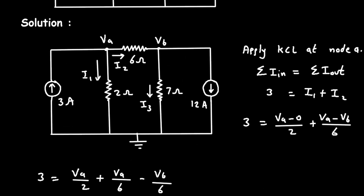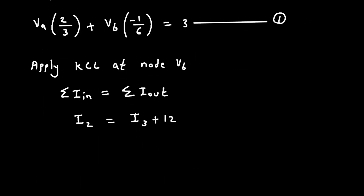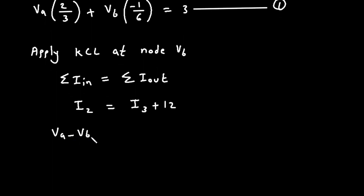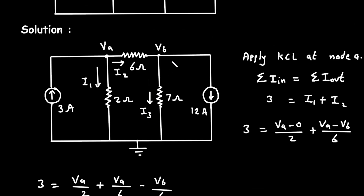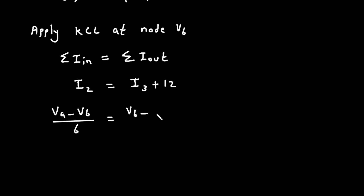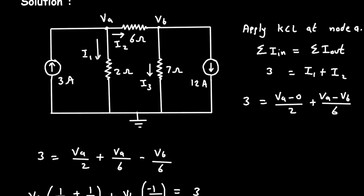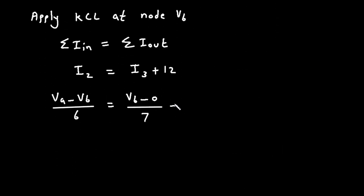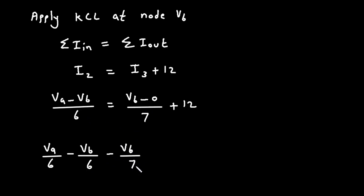Now we can write I2 as VA minus VB divided by 6, and I3 as VB minus 0 divided by 7, then plus 12. So it will be: VA by 6 minus VB divided by 6, then taking the VB term to the left side, minus VB divided by 7, is equal to 12.